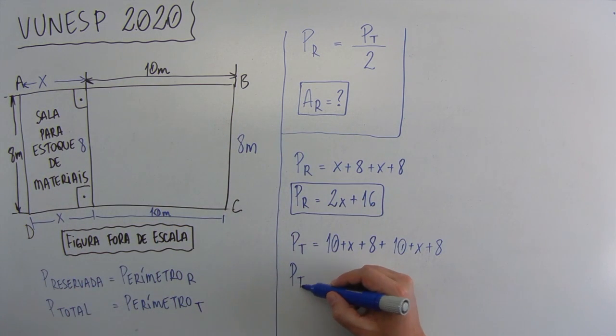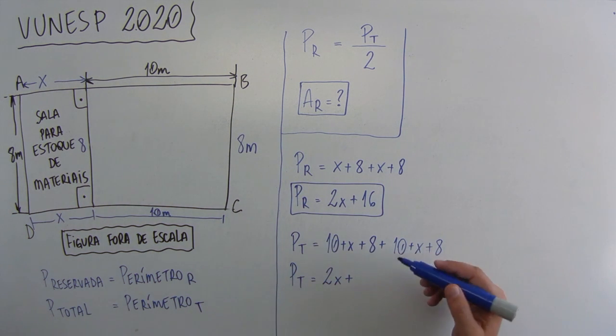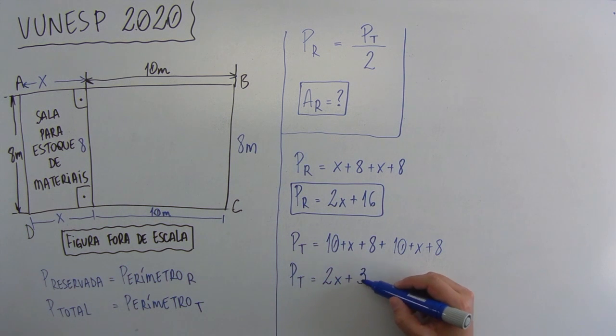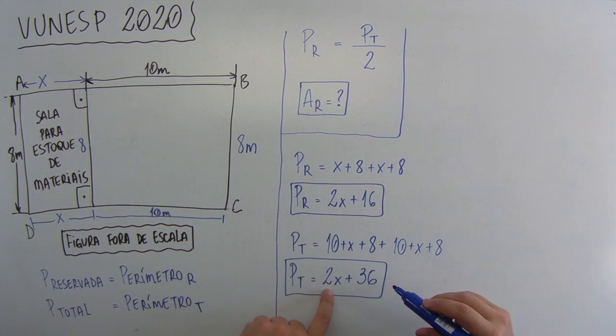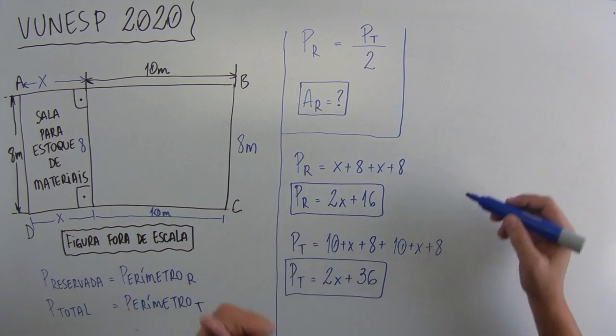Não vou somar esse aqui no meio, porque eu quero só o contorno. Esse é o conceito de perímetro. E o perímetro total aqui, a gente vai fazer o seguinte. Vamos somar tudo que tem X, vai ficar 2X, mais 10 mais 8, mais 10 mais 8, que vai dar 10 mais 10, 20. 8 mais 8, 16. 16 mais 20, vai dar 36. Então, o perímetro total da sala ABCD, disso aqui tudo, é 2X mais 36.